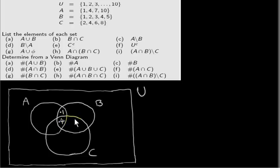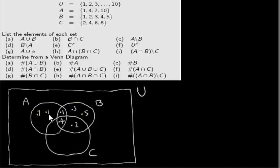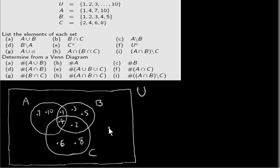What about B and C? Two is the only element that they have in common. Now we can complete the set B. We have one, two, and four, so the remaining elements in B are three and five. The remaining elements in A are seven and ten. The remaining elements in C are six and eight. Nine doesn't appear in any set, so we put it outside the circles.